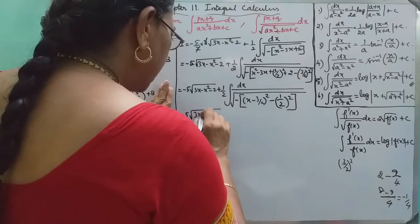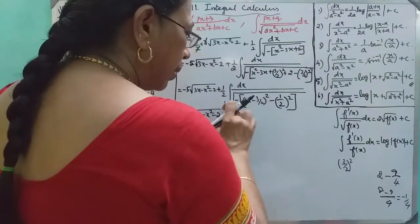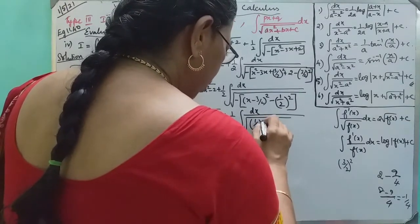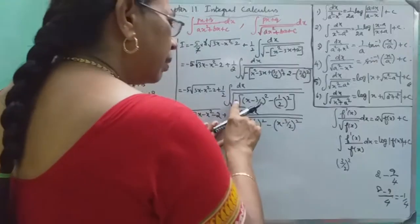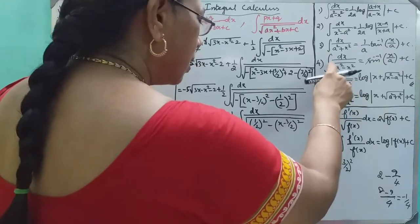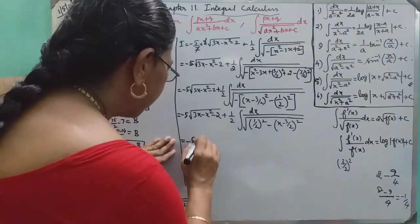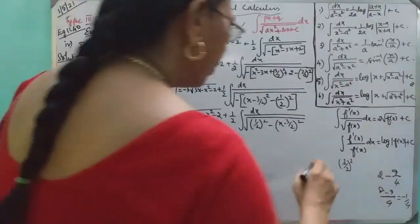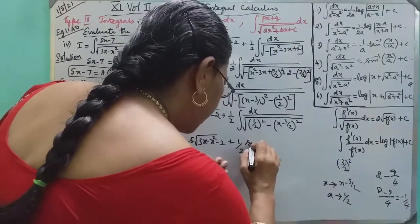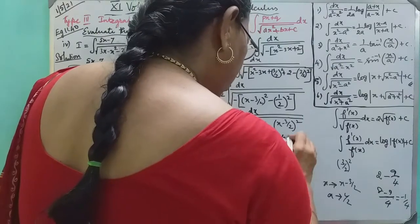So minus 5 into root of 3x minus x squared minus 2, plus 1 by 2. According to the formula, sin inverse of x minus 3 by 2, so 1 by 2 divided by 1 by 2, plus c.